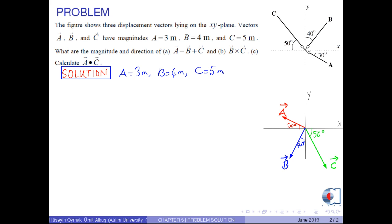A is minus 3 times cosine 30 degrees i hat plus 3 times sine 30 degrees j hat. And vector B is equal to minus 4 times sine 40 degrees i hat minus 4 times cosine 40 degrees j hat.